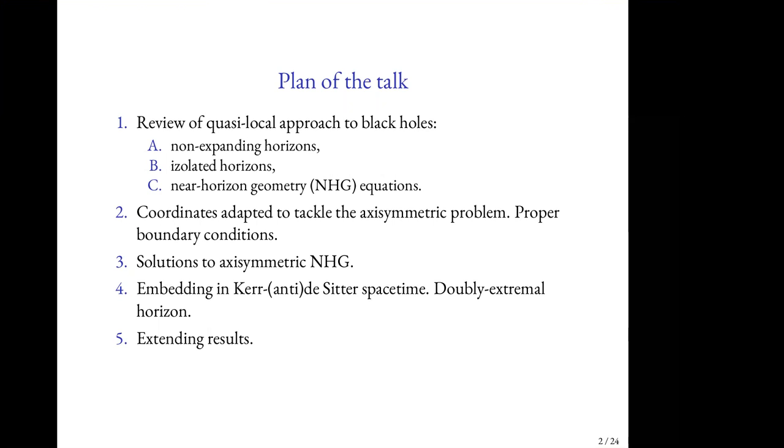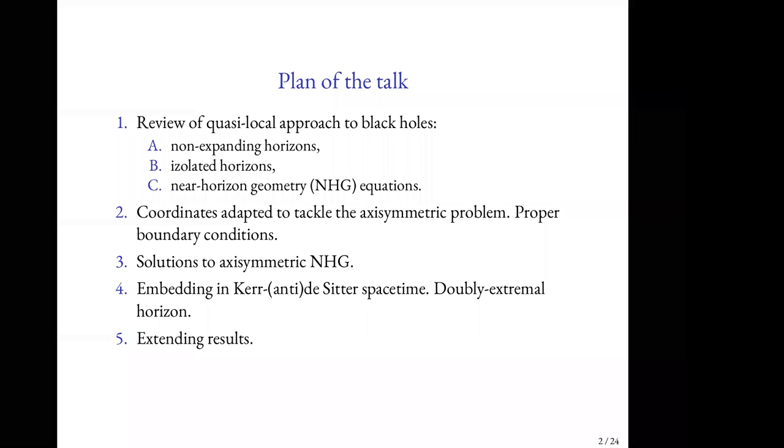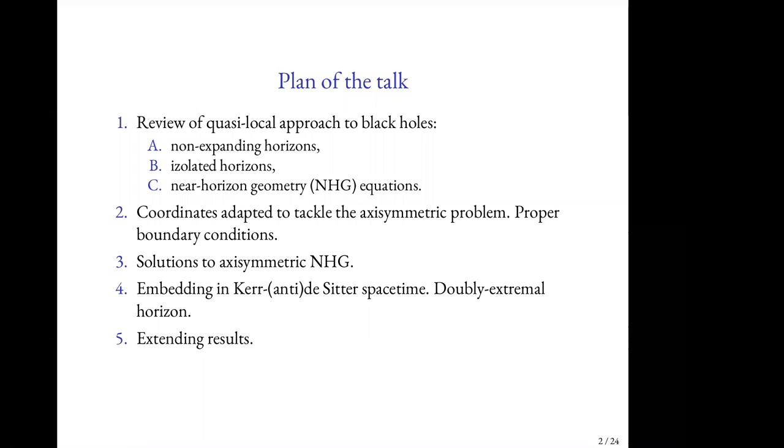I will start with a review of the quasi-local approach to black hole horizons. Then I will introduce adapted coordinates that will allow me to solve this problem in the axisymmetric case. I will be talking about proper boundary conditions in this problem. I will show you the solution for axisymmetric near horizon geometry equations, then embed this solution into Kerr and Anti-de Sitter spacetime. I will mention so-called W-extremal horizons in this case, and then comment on extending these results.